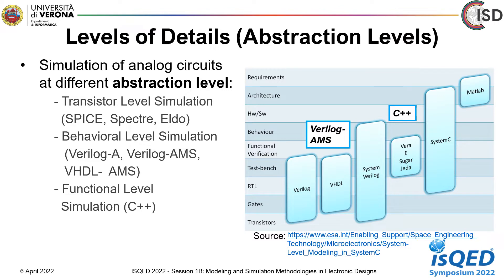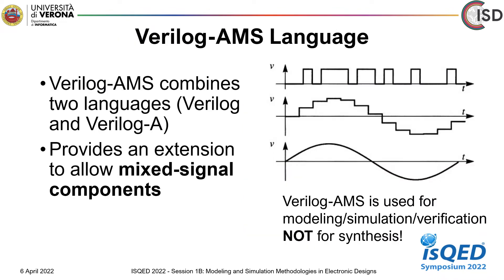Analog circuits can be simulated at behavior level to speed up the simulation. Behavior models can be a set of equations that describe the behavior of a circuit. The most commonly used behavior modeling languages are Verilog-A, Verilog-AMS, and VHDL-AMS. AMS stands for Analog Mixed Signal Descriptions, which combine digital and analog components. Functional level simulations can be performed using C++ and SystemC-AMS-TLM languages. Functional level simulations are closer to the actual hardware as compared to behavior modeling.